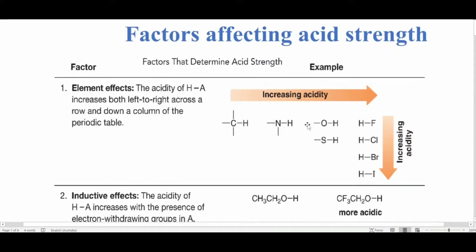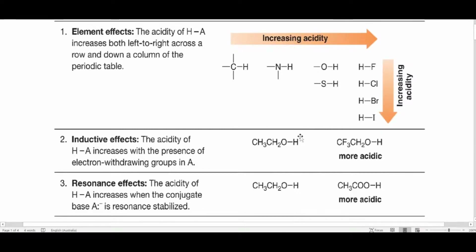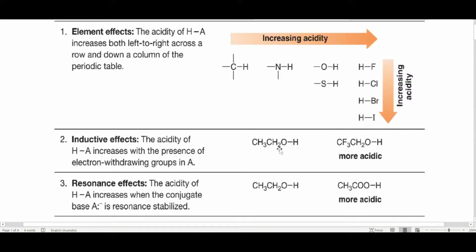Now let's look at the inductive effect. I've already made a video about inductive effect on my YouTube channel — go watch it if you're unfamiliar. Inductive effect clearly affects acid strength. If there are electron-withdrawing groups attached to a compound, that will make it more acidic. For example, ethanol versus CF3-substituted alcohol — fluorine being more electronegative makes the CF3 compound more acidic. The compound with more electronegative elements attached will be more acidic.